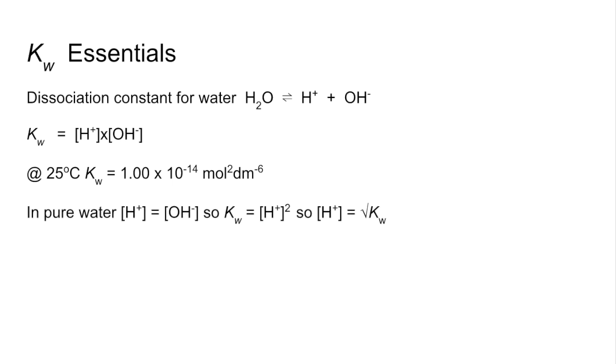In pure water, the hydrogen ion concentration is the same as the hydroxide ion concentration. And you can see that's going to be from the one-to-one dissociation we've got here. We can simplify KW to the hydrogen ion concentration squared, and so the H-plus concentration is the square root of KW.